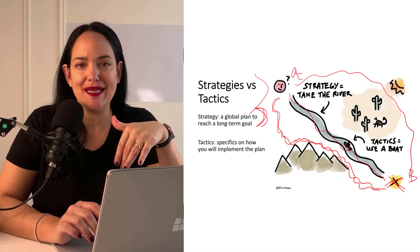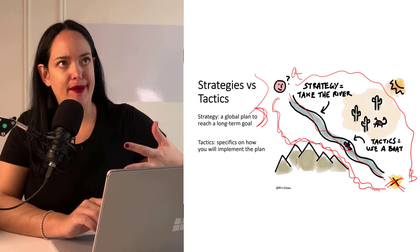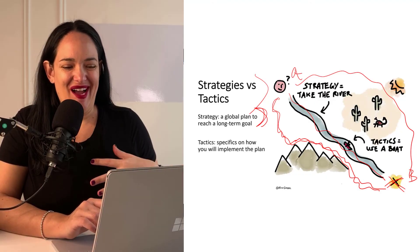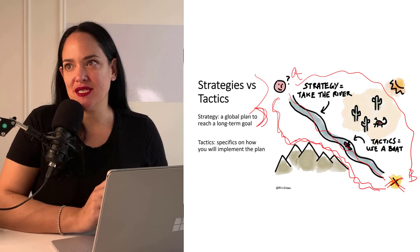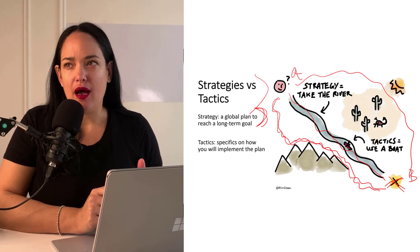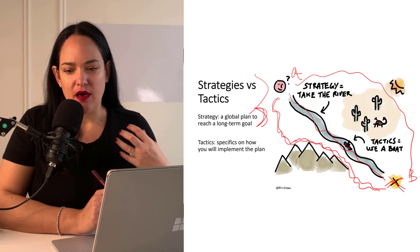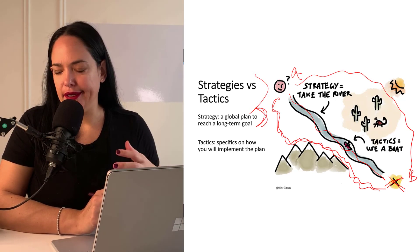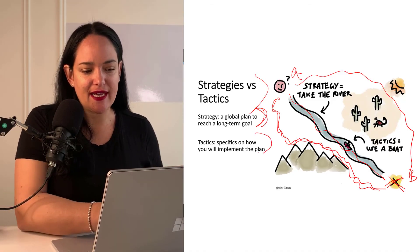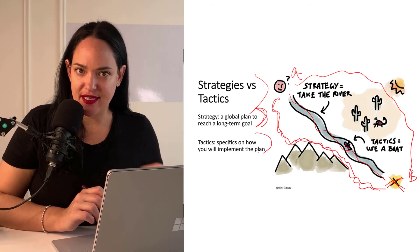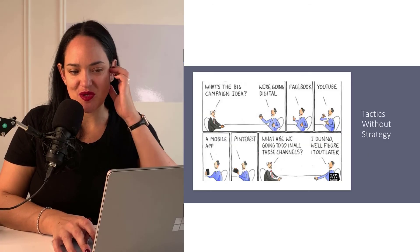Tactics are how you're actually going to execute that strategy. If I take the river route, I'm going to need a boat, paddles, life jackets, and a navigation plan. If I take the mountains, I'm going to need fit people, lots of water, good fitness preparation, and guides. So tactics are the specific things you need to actually get it done — global plan versus how you actually get it done.